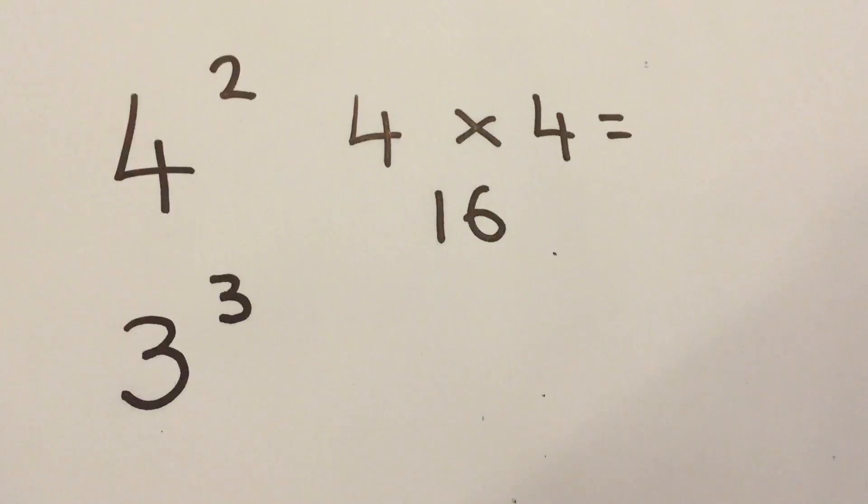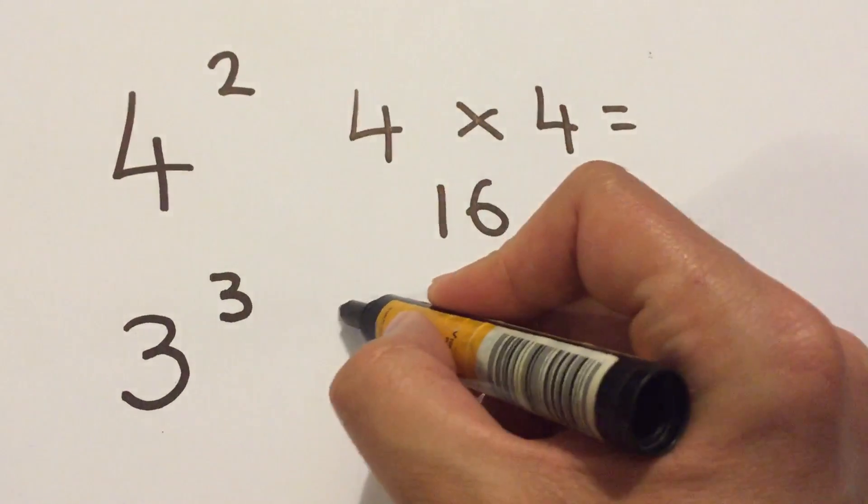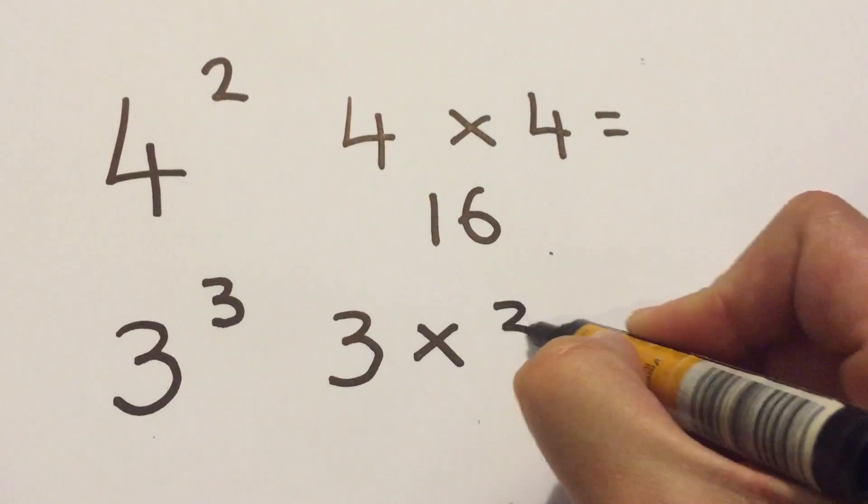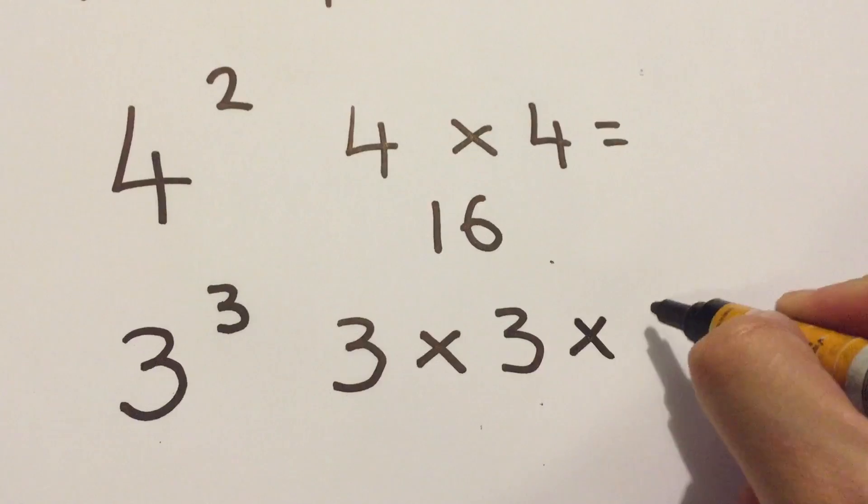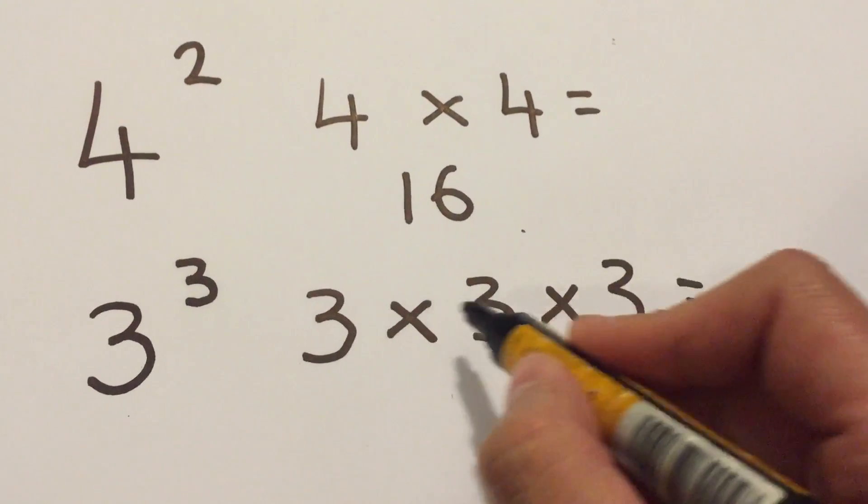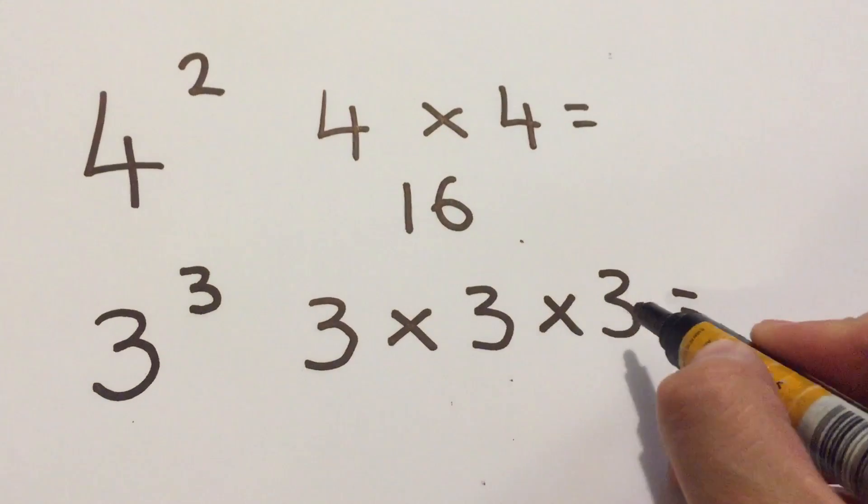It's not 9, okay? It's not 3 times 3 equals 9, but it's 3 times 3 times 3. Okay, now a little bit more difficult but 3 times 3 is 9, 9 times 3 is 27.